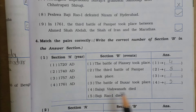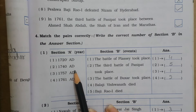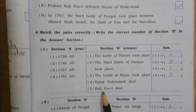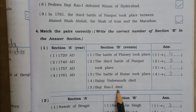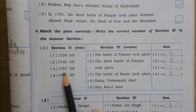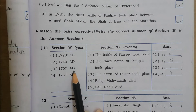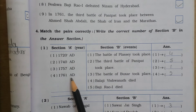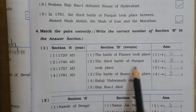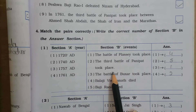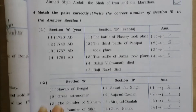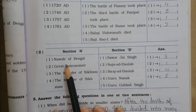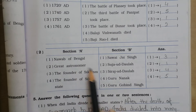Next are Matchings: 1720 AD — Balaji Vishwanath died. 1740 AD — Baji Rao First died. 1757 AD — the Battle of Plassey took place. 1761 AD — the third Battle of Panipat took place.